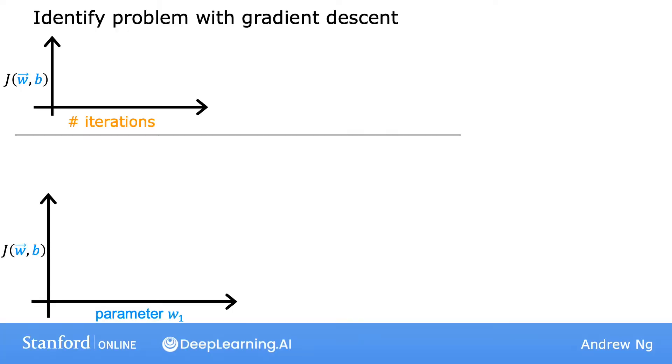Concretely, if you plot the cost for a number of iterations and notice that the cost sometimes goes up and sometimes goes down, you should take that as a clear sign that gradient descent is not working properly. This could mean there's a bug in the code, or sometimes it could mean that your learning rate is too large.